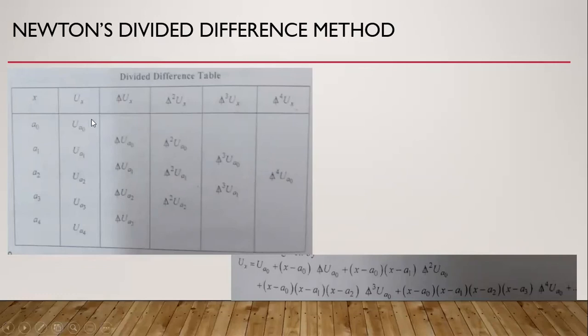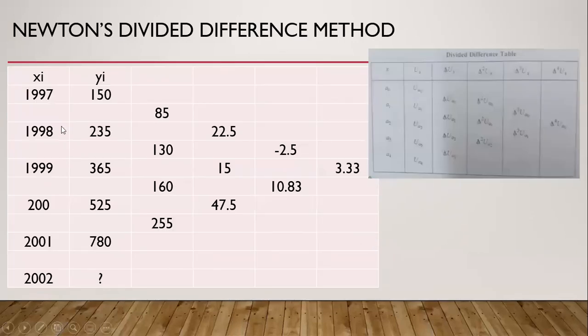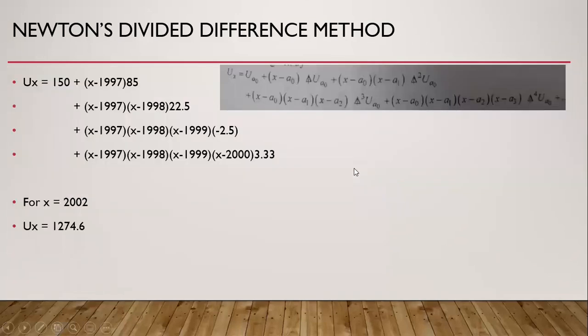Then there is Newton's divided difference method. In this we calculate the divided differences. This is table of divided differences, and by using this formula we forecast the future. I have taken the same example. In the year 1997 we have demand of 150 units. Similarly we need to calculate demand for 2002. And this is the divided differences. By using this formula we can actually calculate the demand, future demand for the year 2002, that comes out to be 1274.